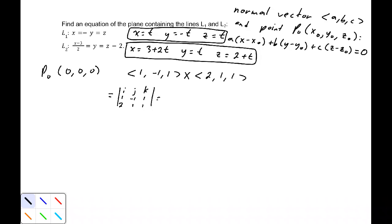That'll equal the determinant of my first minor matrix: -1, 1, 1, 1, times i, minus the determinant of eliminating the j component: 1, 1, 2, 1, times j, plus the determinant of eliminating the k component: 1, -1, 2, 1, times k.